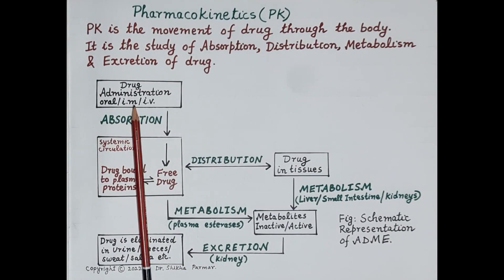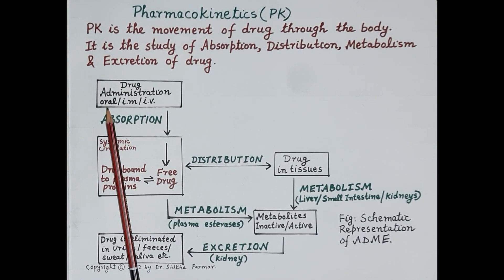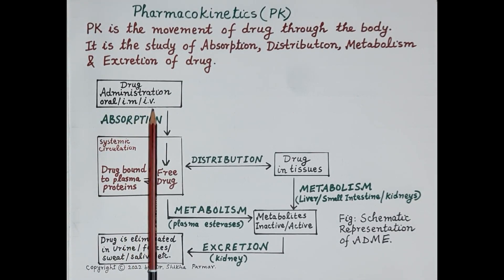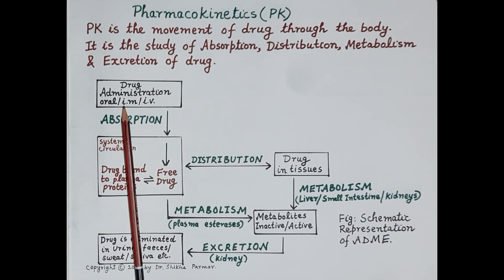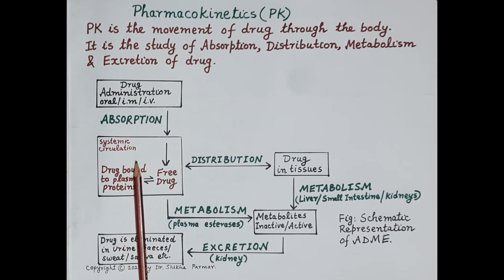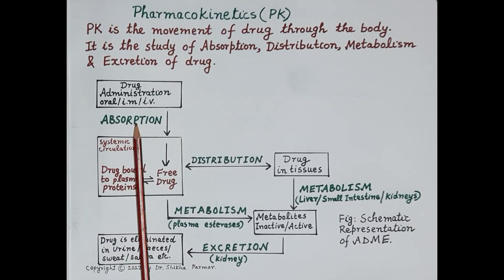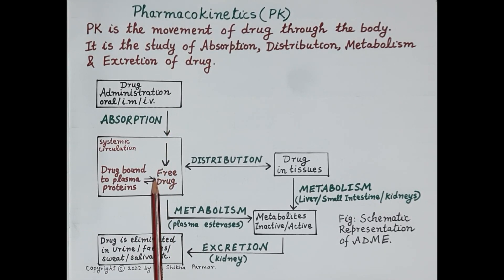If a drug is administered by any other route, such as the oral route, the drug is swallowed and reaches the stomach or small intestine. The drug has to cross the wall of the stomach or small intestine to reach the systemic circulation. So except when given IV, in all other routes the drug has to cross biological membranes. Absorption is the movement or transport of the drug from its site of administration into the blood circulation.